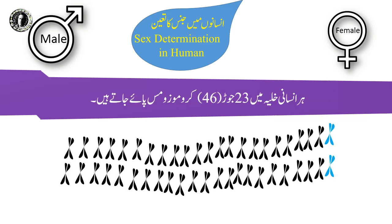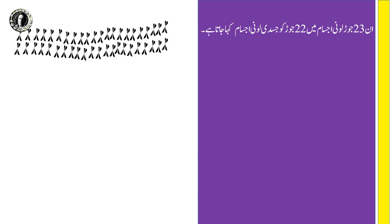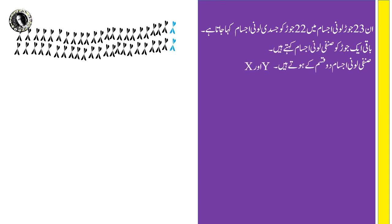ہر انسانی خلیے میں 23 جوڑ، 46 کروموزومز پائے جاتے ہیں۔ ان 23 جوڑ لونی اجسام میں 22 جوڑ کو جزدی لونی اجسام کہا جاتا ہے اور باقی ایک جوڑ کو سنفی لونی اجسام کہتے ہیں۔ سنفی لونی اجسام دو خسم کے ہوتے ہیں: X اور Y۔